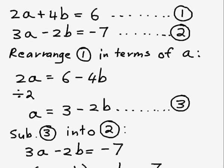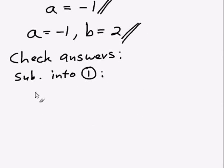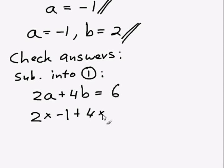So if I go up and check equation 1 it's 2a plus 4b equals 6. So instead of a I'll write negative 1, and instead of b I'll write 2. So basically we're just checking whether this equation is going to actually become true.